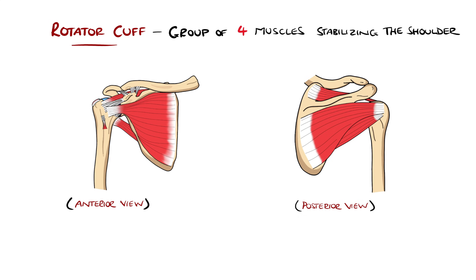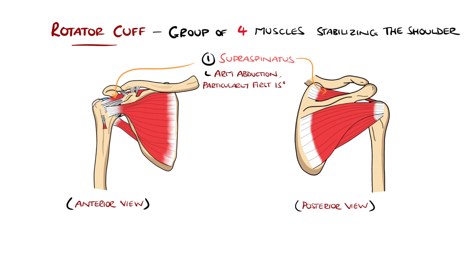First is the supraspinatus, which is involved in abduction of the arm, particularly in the first 15 degrees of motion, after which the deltoid becomes the main contributor.